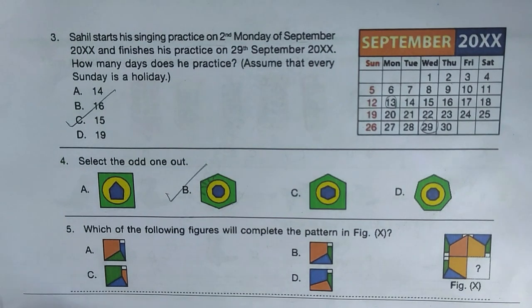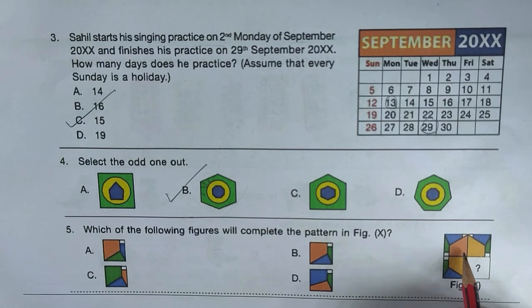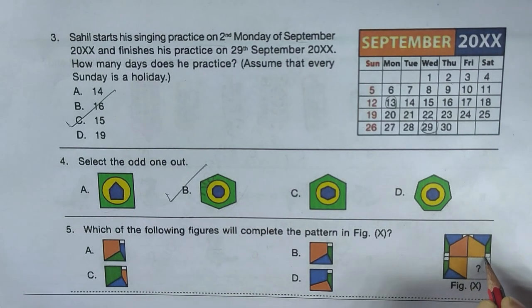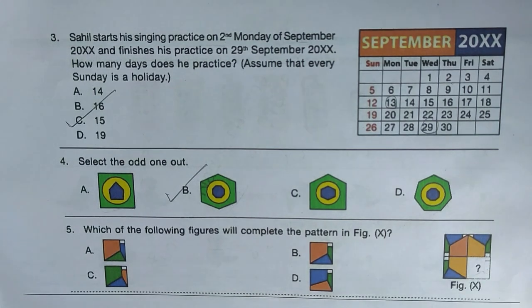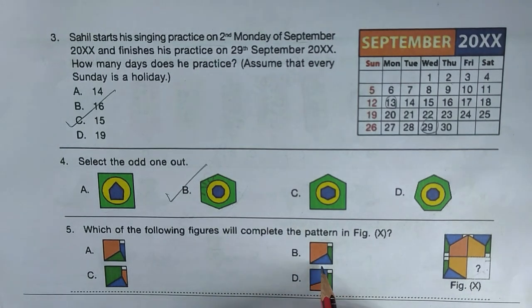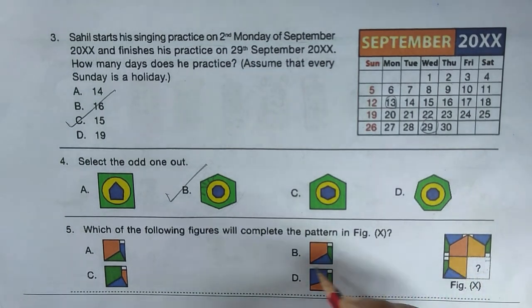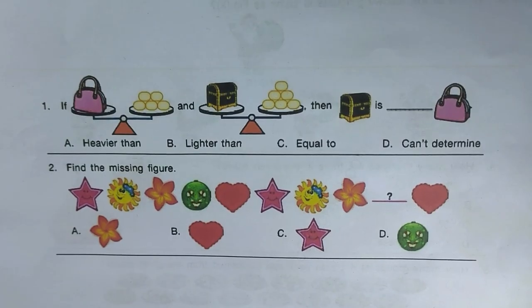Question five: which figure will complete the pattern in the box? We need an orange area, a blue rectangle, a white border, and a green section. Only option B has the orange color, a blue triangle, green figure, and white — so option B is the most probable fitting answer.